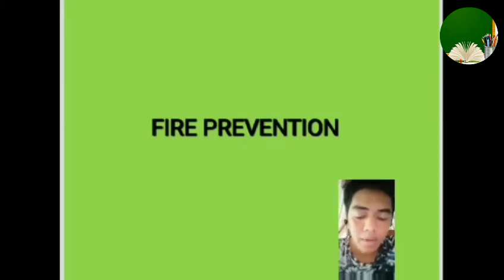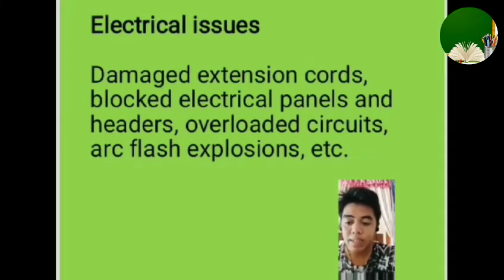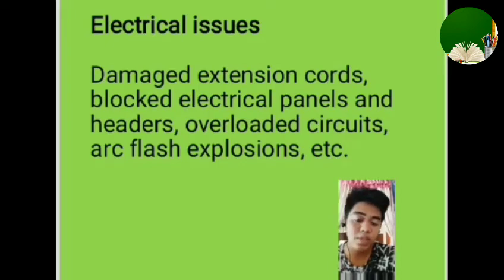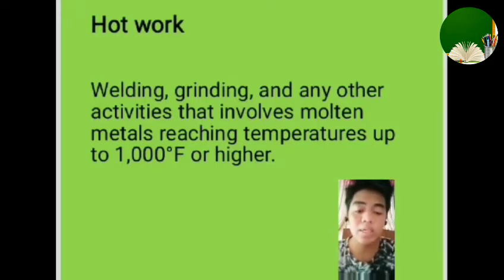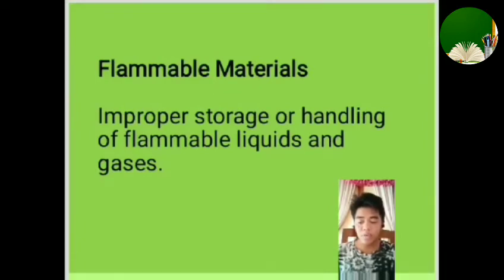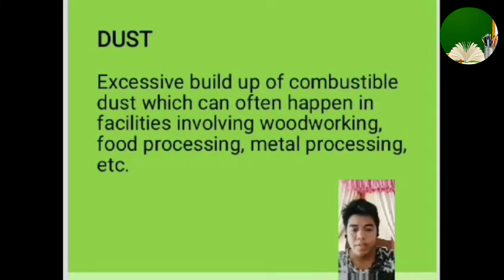My name is Gerald Rubin and this is my report. What is fire prevention? First: electrical issues — damaged extension cords, faulty electrical panels, and overloaded circuits can cause flash explosions. Second: hot work such as welding and grinding, and any activity involving metals reaching temperatures up to 1,000 degrees or higher. Third: flammable materials — improper storage or handling of flammable liquids and gases. And last: dust — buildup of combustible dust, which can often happen in facilities involving woodworking, food processing, or metal processing.